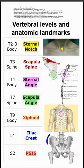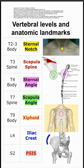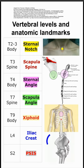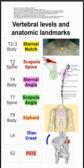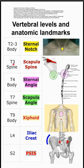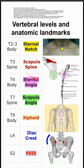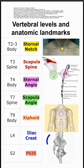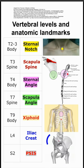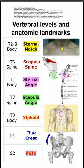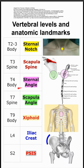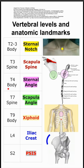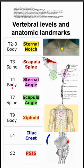Next is the scapula spine, which is this red region of the scapula, which corresponds to the spine of T3. Next is the sternal angle. You can see the sternal angle here in this image from the side, and that corresponds to the body of T4.